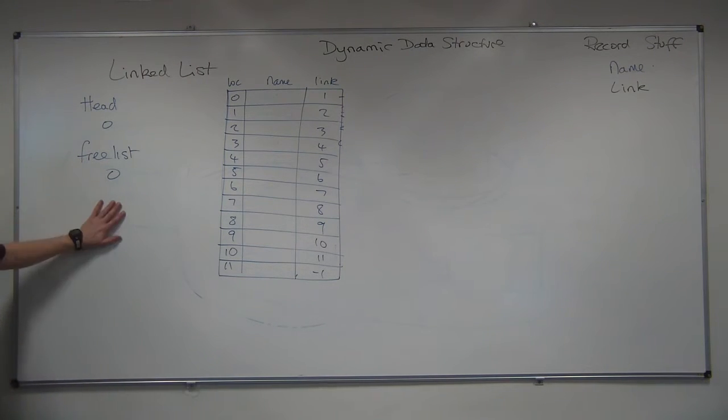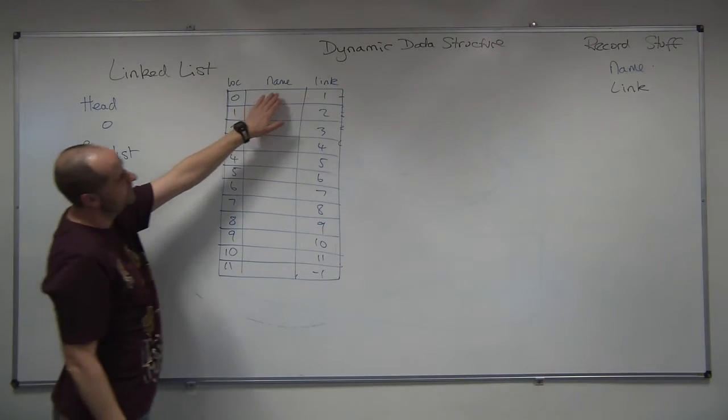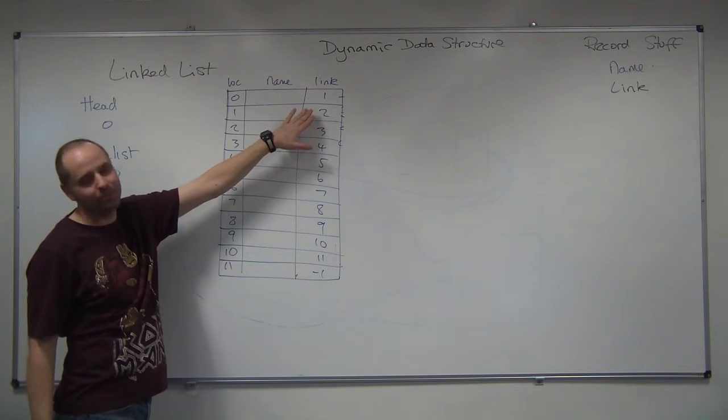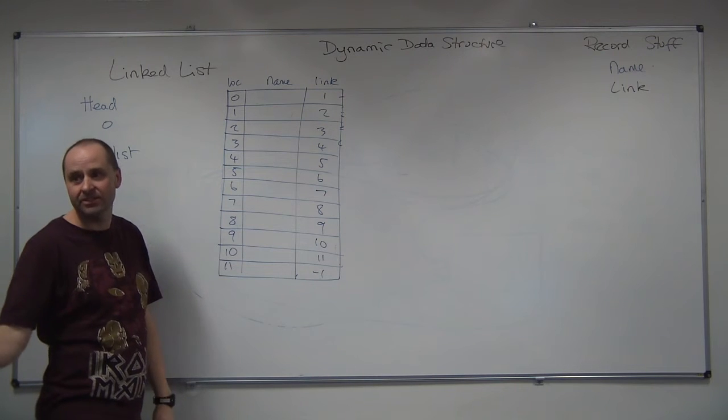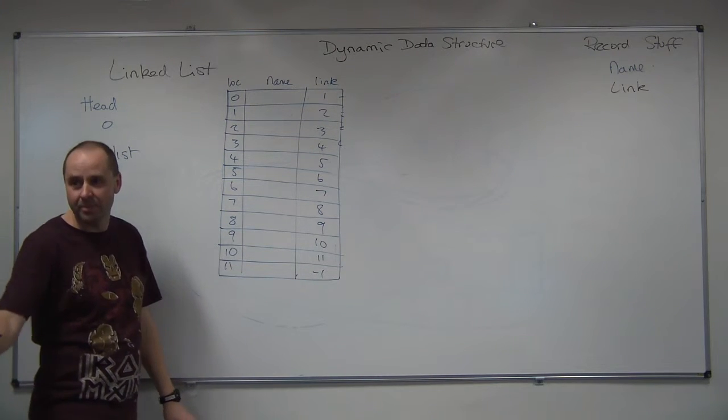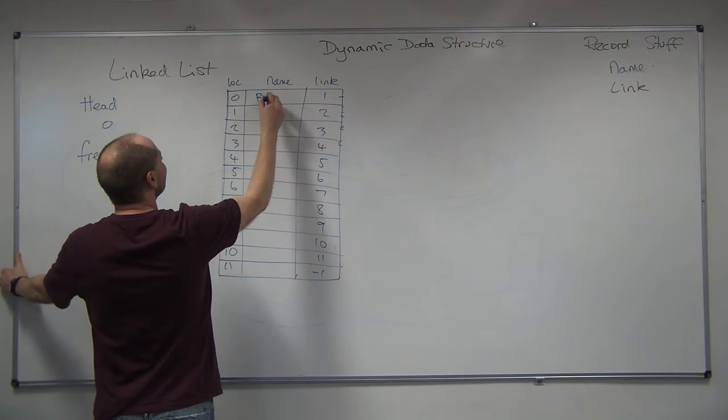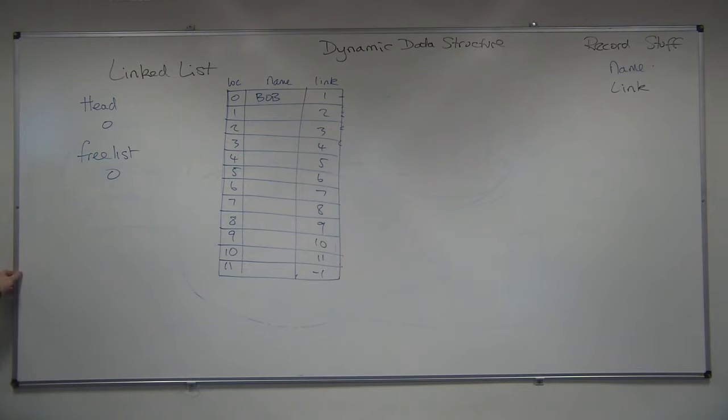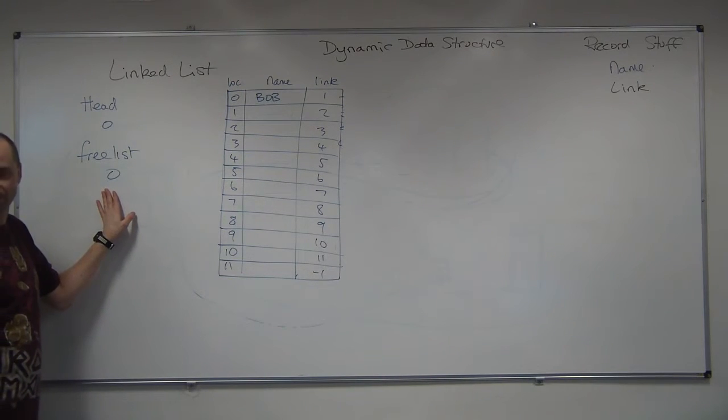Need somewhere to put Bob. The free list is joined up. This is the first space in the free list. The next space is at position 1. The space after that is at position 2. I've just joined all these free spaces together using a list. You're happy with that?